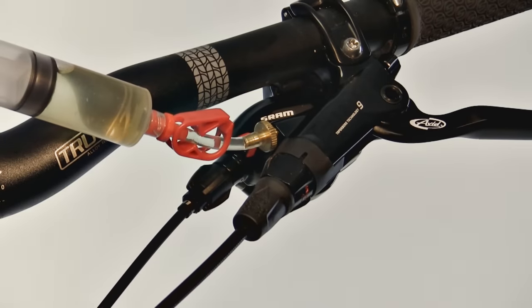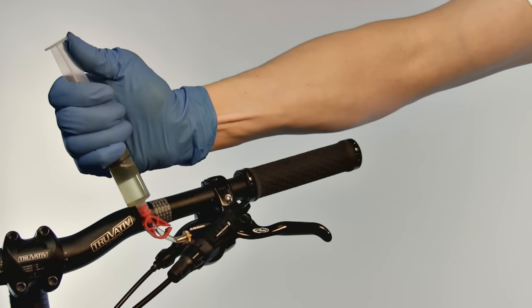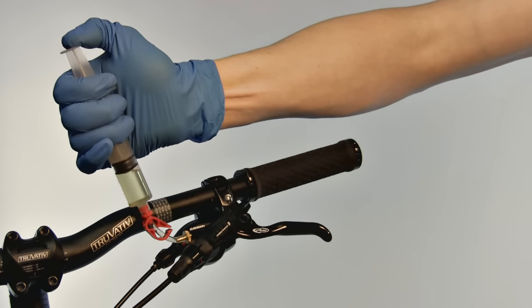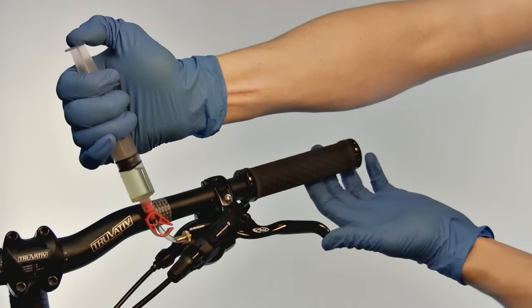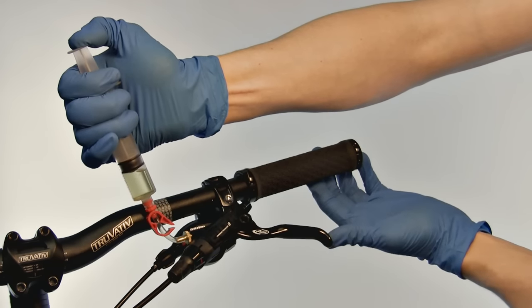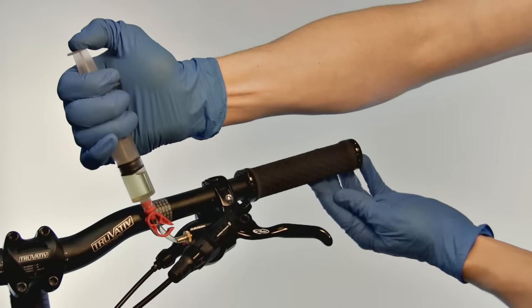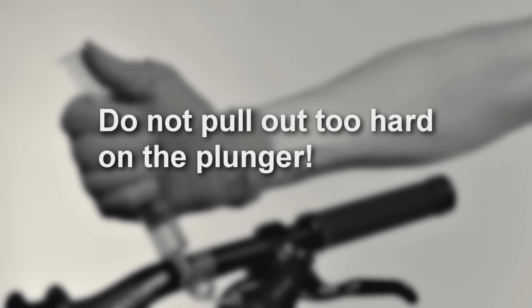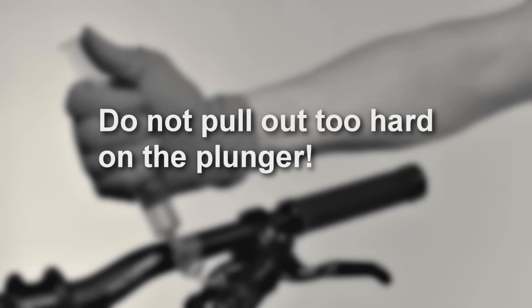Open the clamp on the lever syringe. Pull on the lever syringe plunger to create a vacuum. Then gently push in on the plunger to pressurize the system. Squeeze and release the brake lever ten times, allowing the lever to snap back. Repeat this procedure several times until large bubbles stop coming out of the lever. Be careful not to pull out too hard on the plunger or you will pull air past the plunger seal.